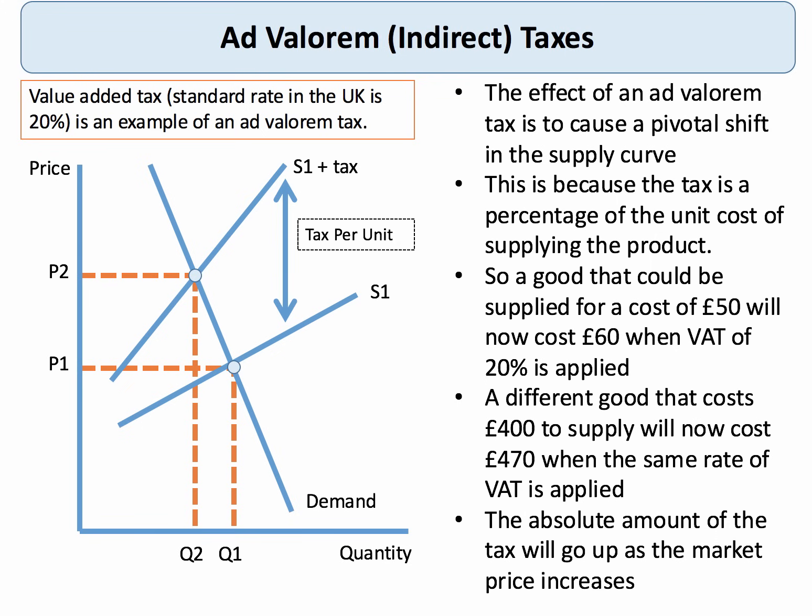It's a pivotal shift because the tax is a percentage of the unit cost. If the price is higher, the tax changes accordingly. For example, if a product costs £50 and you apply a 20% tax, it adds £10 to the price; if the product is £400, it adds £80 in VAT. The absolute amount of tax goes up as the market price increases. Examples include putting VAT on high-salt foods or an extra tax on carbon emissions.